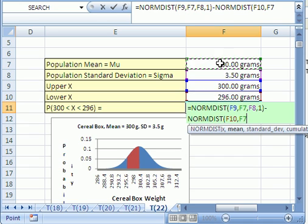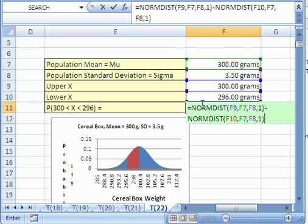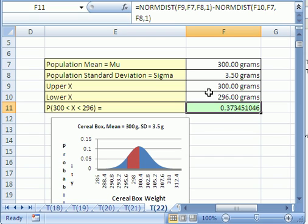comma, standard deviation, comma, one for cumulative, close parentheses. Notice, bigger area minus smaller area. Bigger area minus smaller area. Control enter. There's your answer. The probability of pulling a box between those two values is 0.37.